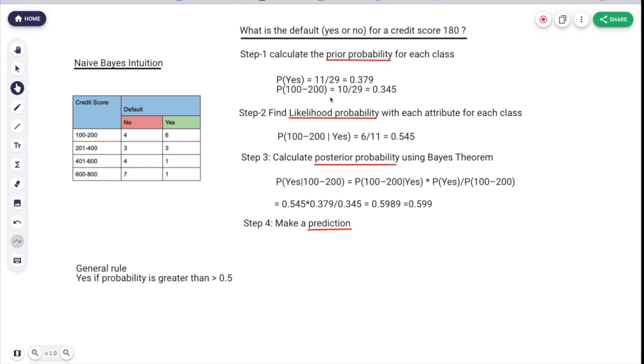Step 2: Now we want to calculate the likelihood probability. P(100-200|Yes), that is 6, and we are only considering yes here, so 6 plus 3 plus 1 plus 1, that's 11. We are not considering no, so that's why 29 changes to 11. So 6 by 11, that's the likelihood probability.